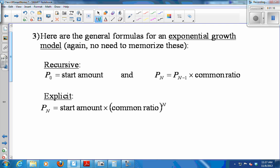You don't need to memorize them because we just came up with formulas for the rabbit population without knowing these, but they're good to have handy. So for a recursive formula, you give the starting amount, and then you give a formula for how it grows, which would be the previous year's population times the common ratio. And explicit would be the starting amount times the common ratio to the N. Multiply by the common ratio N times.